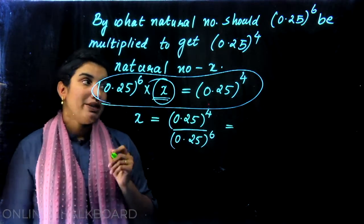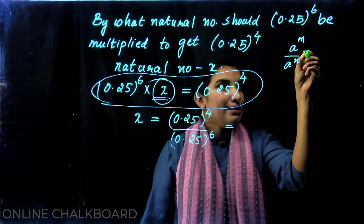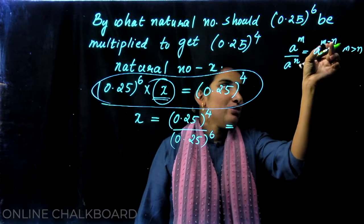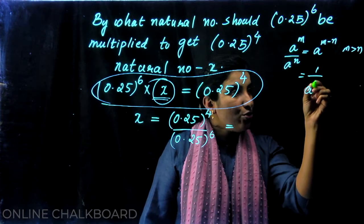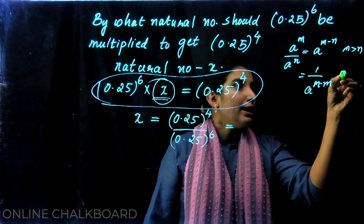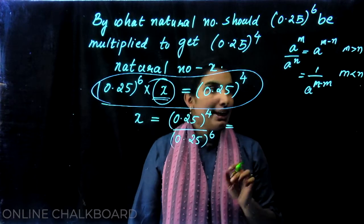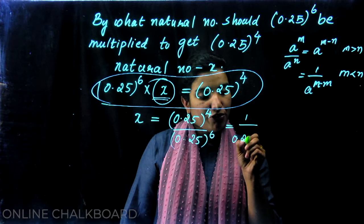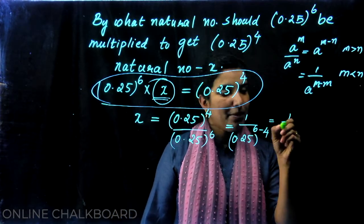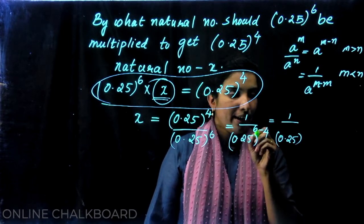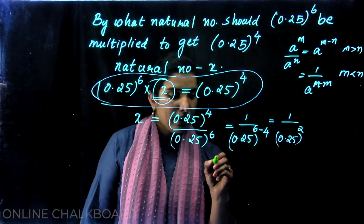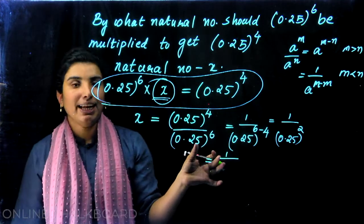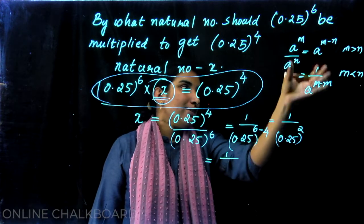That is equal to — this is the division rule. A raised to m divided by a raised to n is equal to a raised to m minus n, for m greater than n. This is equal to 1 by a raised to n minus m for m less than n.